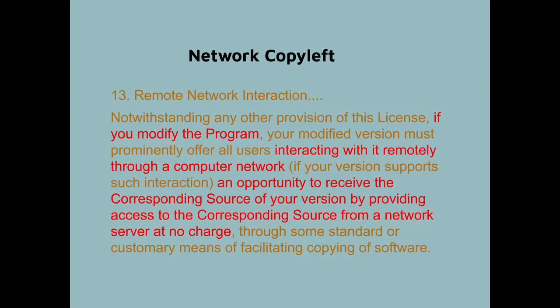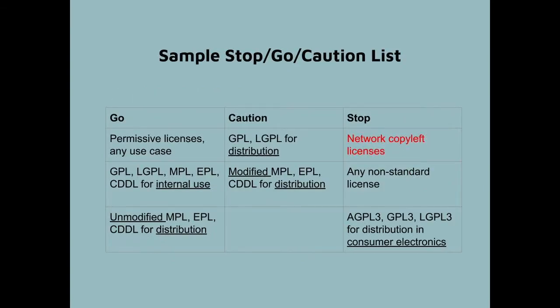It's important to keep in mind that this condition only applies if you modify the AGPL code. So why won't your company let you use AGPL code? The answer has to do with risk-benefit analysis. On this slide, you will see a sample stop-go caution list of the type used by most companies for their open source compliance policies.